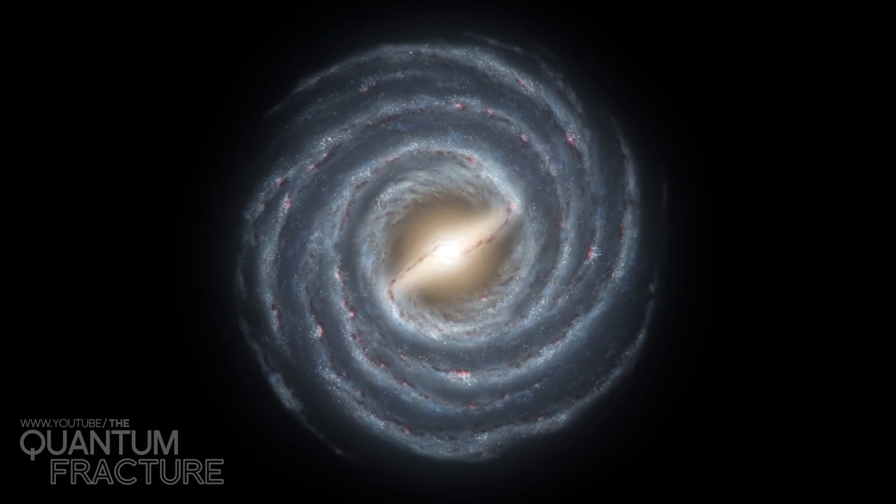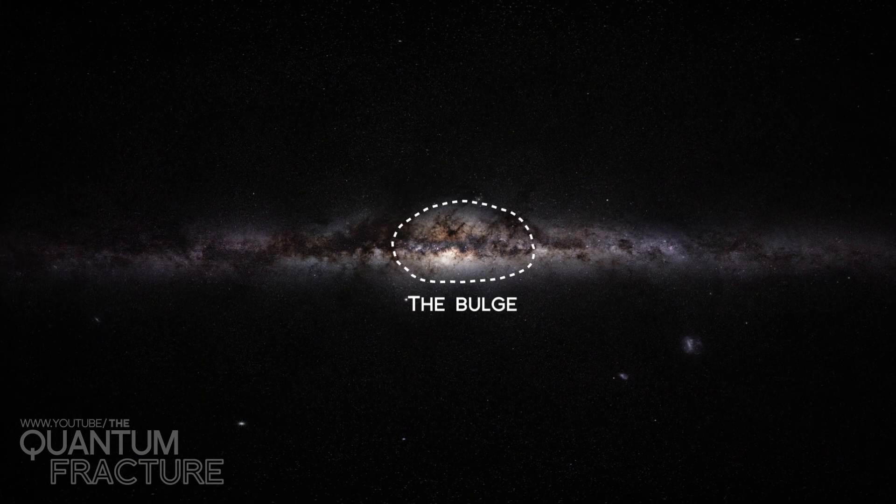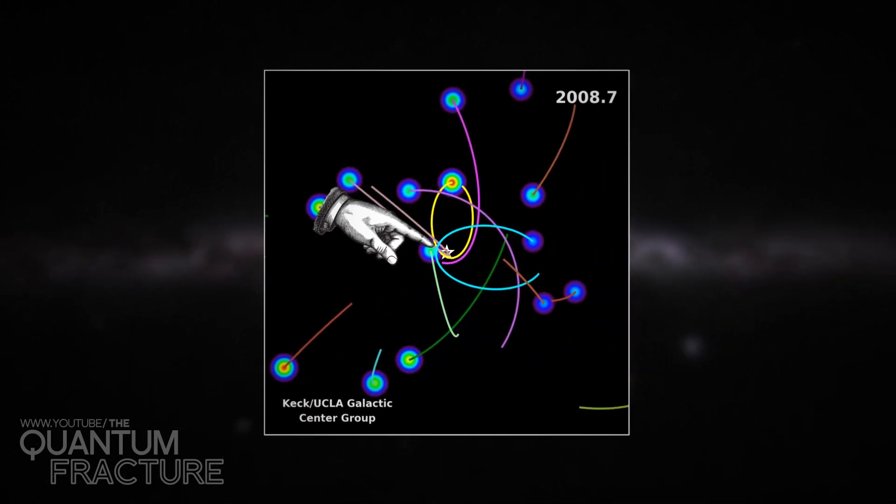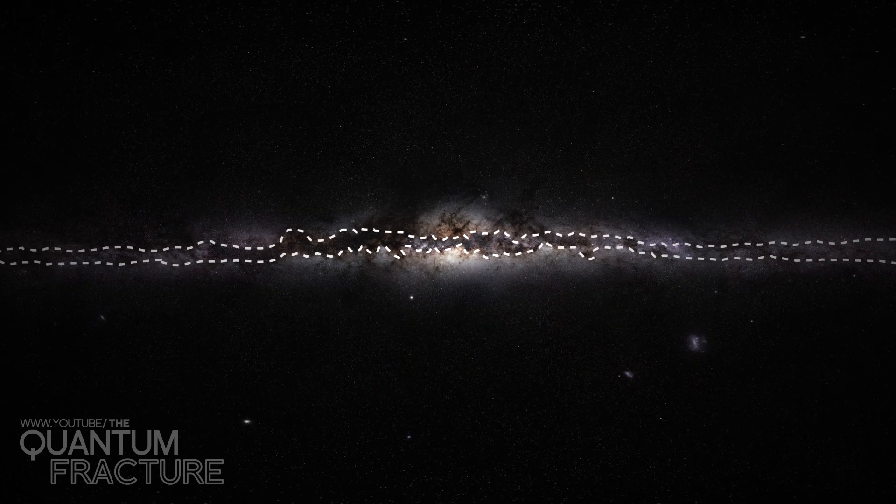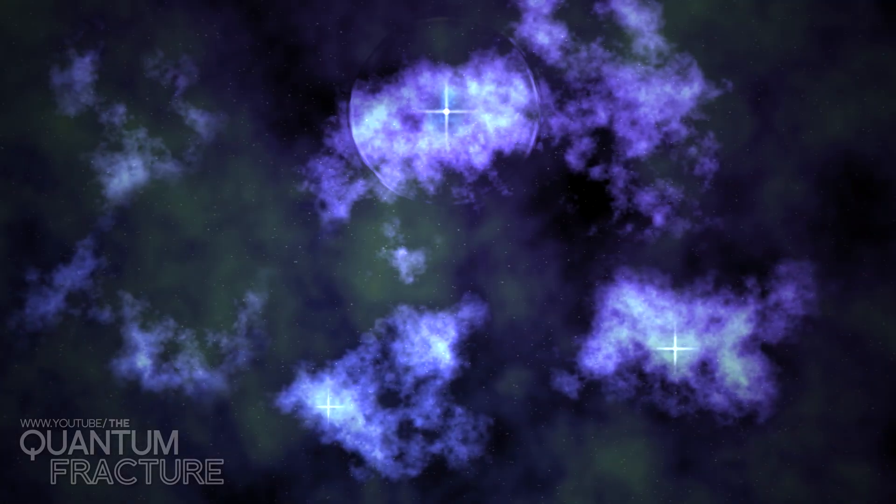It's a spiral galaxy, which means we can distinguish two basic areas. The historic quarter, the bulge, where the oldest stars live alongside a gigantic black hole. And the modern part, the disk, filled with lighter elements, the perfect place for new stars to form.